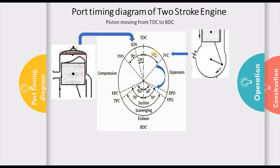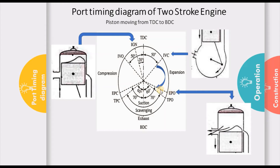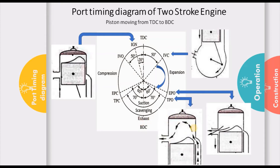From TDC, as the piston moves downward, expansion is happening. This expansion continues until the exhaust port opens at around 70 degrees before bottom dead center. At that point pressure is relieved and effective expansion ends. Since the exhaust port is open, pressure inside the combustion chamber is relieved. As the piston moves further down, the transfer port also opens and fresh charge comes in.